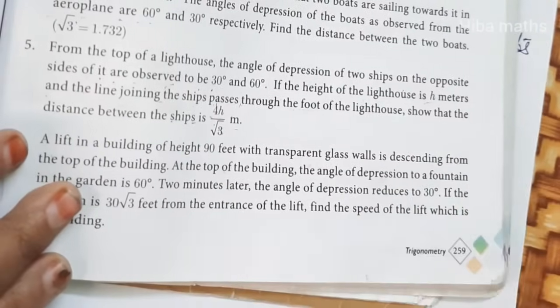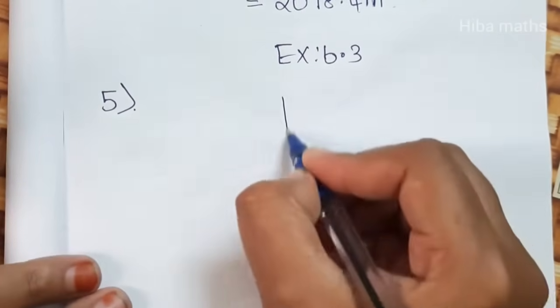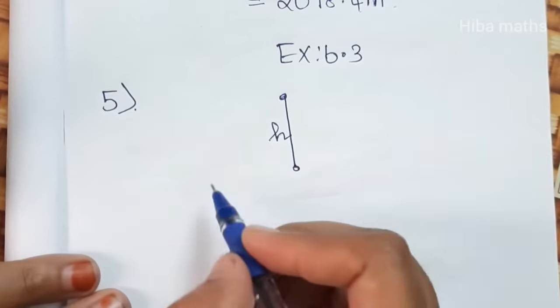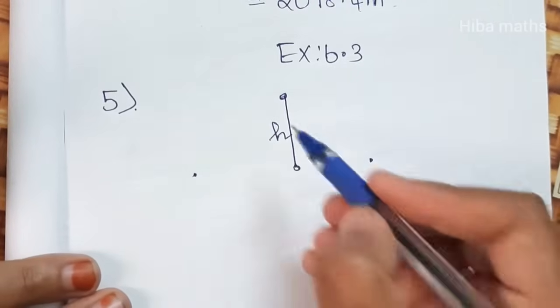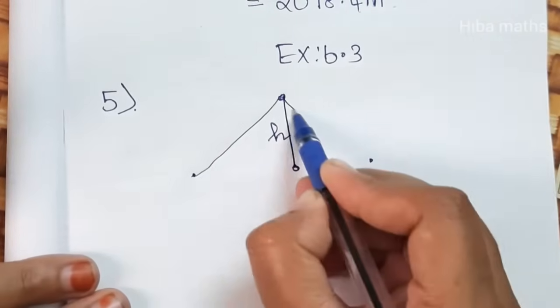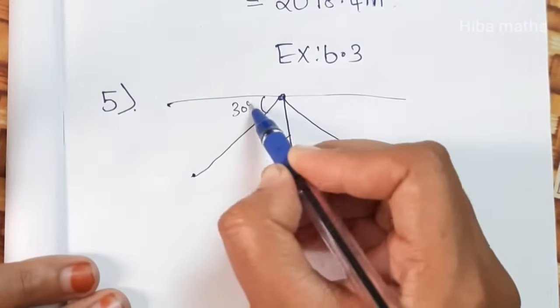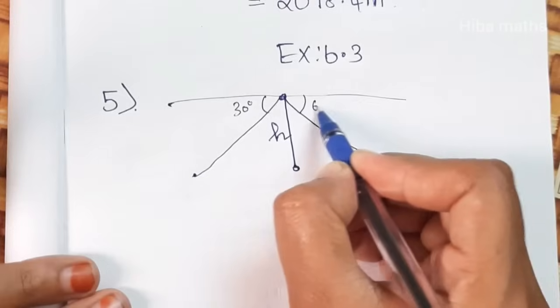Let's prove that the value is correct. In the question, we have a diagram of a lighthouse. This is the height h. There are ships on both sides, and we can see the angle of depression is 60 degrees on one side.